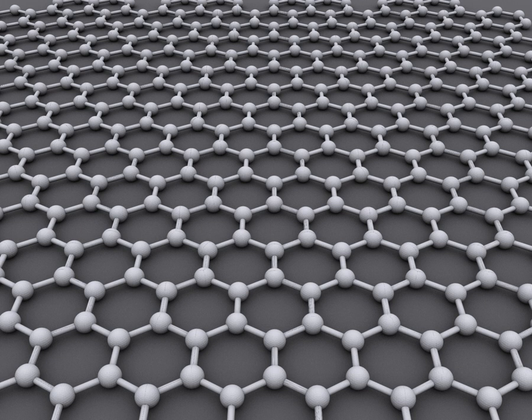It can be considered as an indefinitely large aromatic molecule, the ultimate case of the family of flat polycyclic aromatic hydrocarbons. Graphene has many uncommon properties. It is the strongest material ever tested, conducts heat and electricity efficiently, and is nearly transparent.